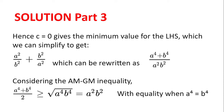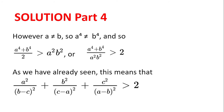Considering the AM-GM inequality, which gives us (a⁴ + b⁴) / 2 ≥ √(a⁴b⁴) = a²b², with equality when a⁴ = b⁴. We get (a⁴ + b⁴) / 2 > a²b² strictly, because a ≠ b and so a⁴ ≠ b⁴.